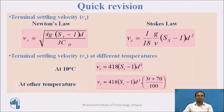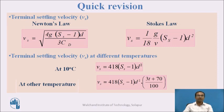Let's have a quick revision on the formulas. The terminal settling velocity, Vs, can be solved by two laws. The first is Newton's law: Vs is equal to the root of 4g, bracket specific gravity, that is small s minus 1, into d, the diameter of particle, divided by Cd into 3. The second law for discrete particles of spheres: Vs is equal to 1 by 18, multiplied by g by nu, multiplied by small s minus 1, d square.